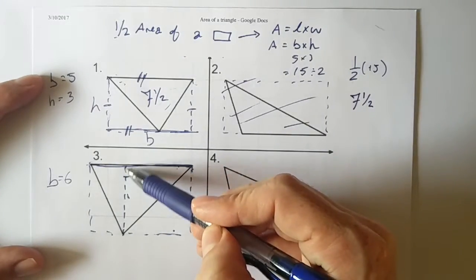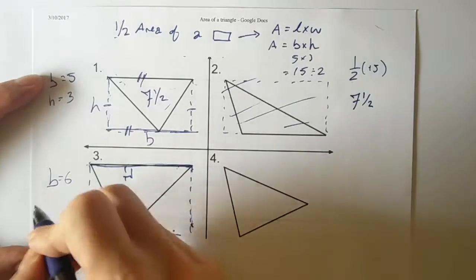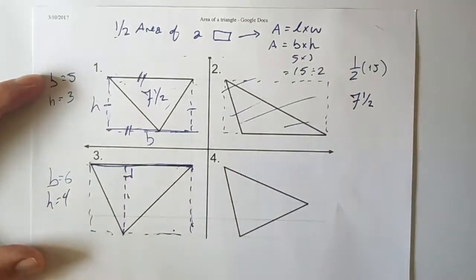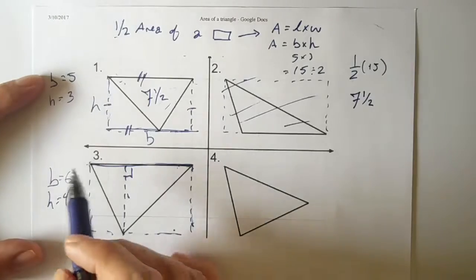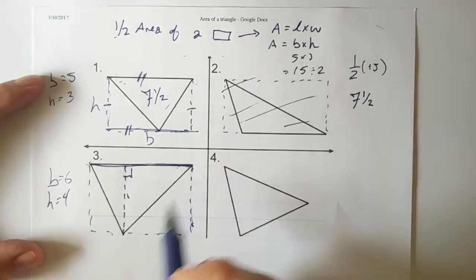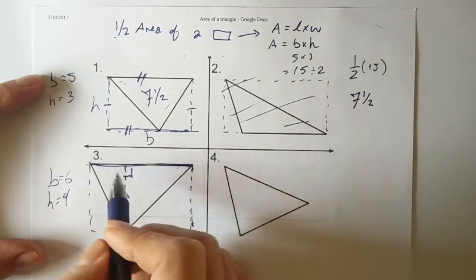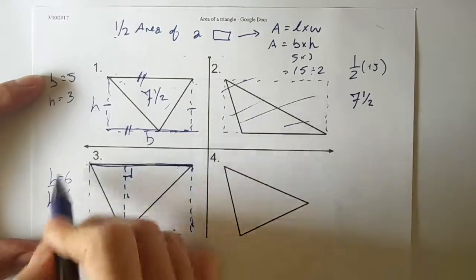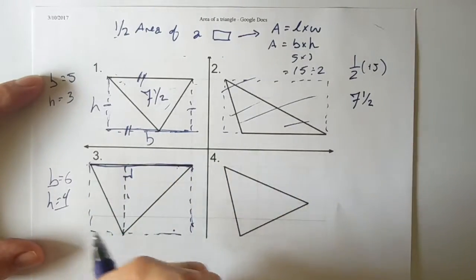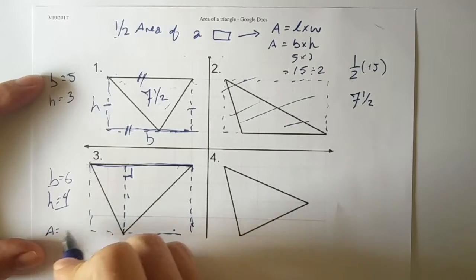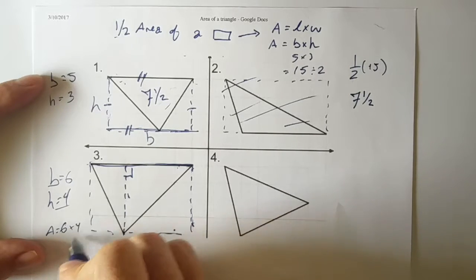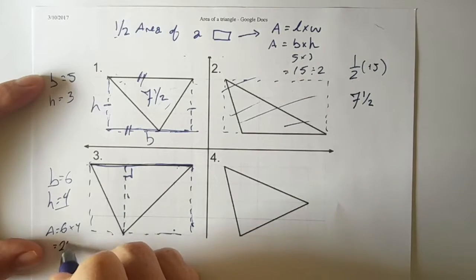And what's the height? The height here is 1, 2, 3, 4. And the height is 4. So if I have the height of my rectangle, the height of my triangle, the base of my rectangle, the base of my triangle, same things, I have 6 and 4. So the area of the rectangle is 6 times 4, which is a total of 24.